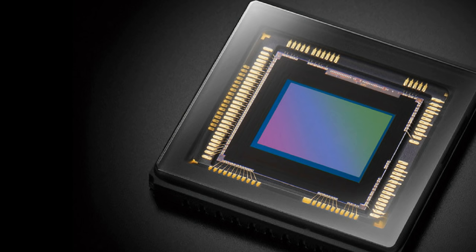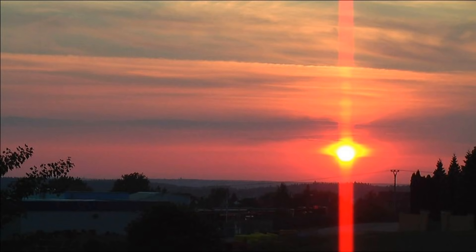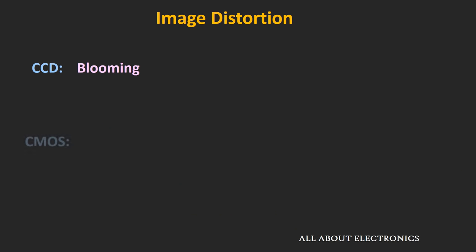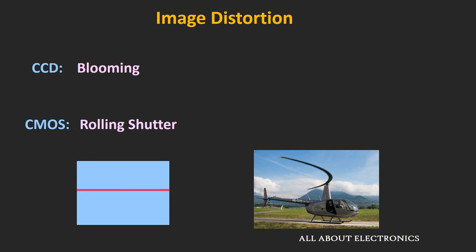Now let's compare these image sensors in terms of image distortion. In the case of the CCD sensor, when you expose this sensor for a longer time, you will see the effect known as blooming. Nowadays, by using anti-blooming techniques, we can reduce this blooming. While in the case of the CMOS sensor, the most common type of distortion is known as the rolling shutter. As we have seen, in the CMOS sensor the pixels are read in a line-by-line fashion, so whenever any fast moving object is captured by this CMOS sensor, the rolling shutter effect is quite noticeable.